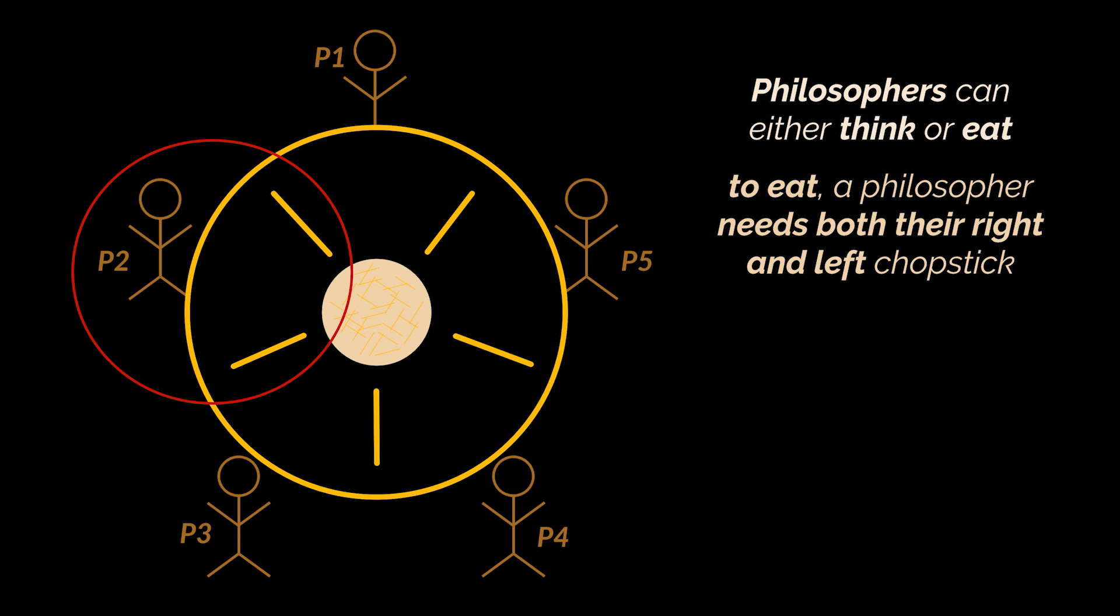However, to eat, a philosopher needs both their right and left chopstick, meaning a philosopher can only eat if both his immediate left and right chopsticks are available. If both chopsticks are not available, then the philosopher can't eat and starts thinking again.